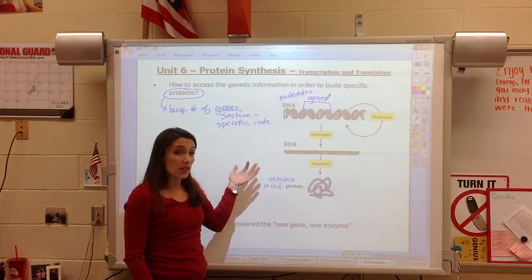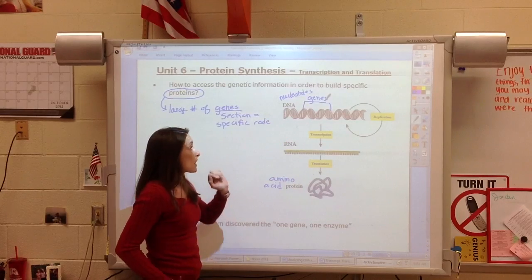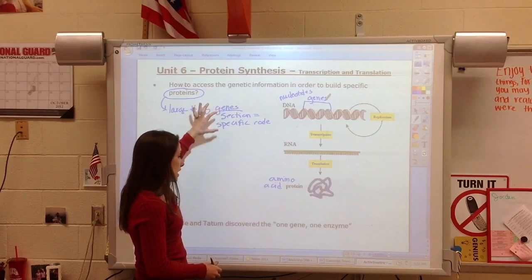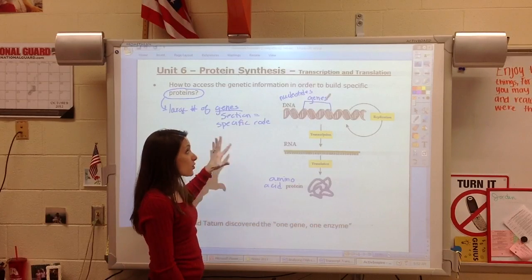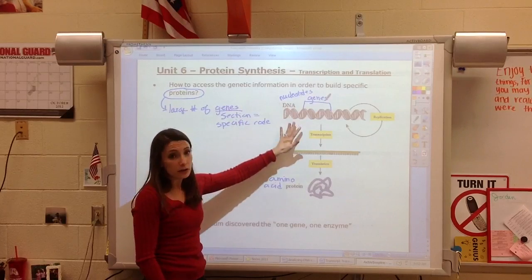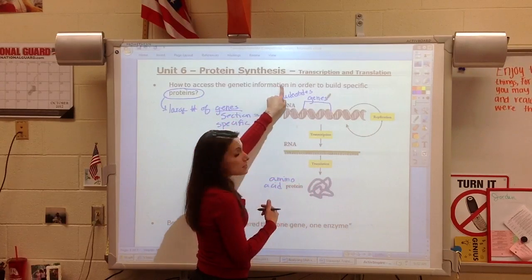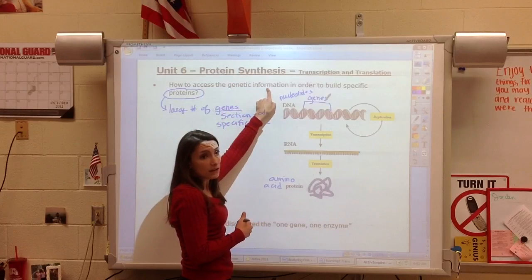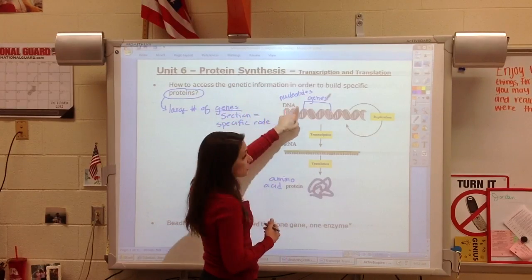In humans there are over 10,000 different genes or different sections. Some genes are going to actually create a protein like an enzyme. Others are actually going to be regulatory genes that help turn on and off other genes. So within the genome we're actually going to see a significant amount of genetic information, of which we're going to use some of that to build specific proteins.